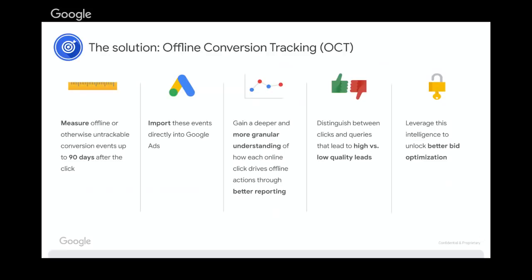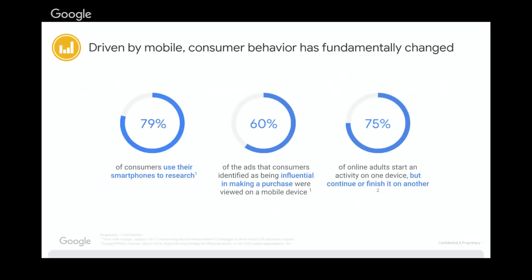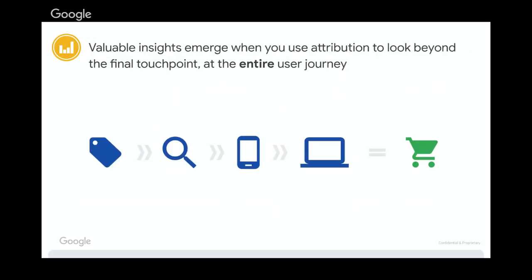Setting up offline conversion tracking involves someone who can make changes to your CRM and your developer, and you can learn more by speaking with your account manager or the Google Ads Help Center. The customer journey now involves multiple touch points on multiple devices. 79% of customers use their smartphones for research before purchase, and 60% of ads consumers found influential in their purchase were viewed on mobile first. And as mentioned, 75% of people start an activity on one device but finish it on another. Despite all this data, many advertisers are not properly valuing mobile or the earlier stages in their customer journey — they're just looking at that final touch point before a conversion, leaving really valuable insights on the table. It's critical that we look at the entire customer path.